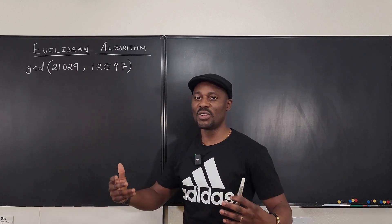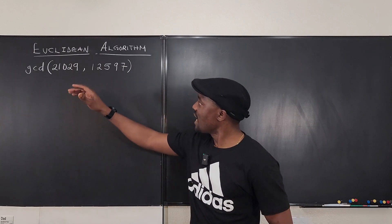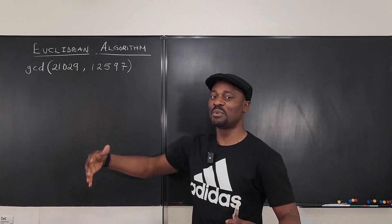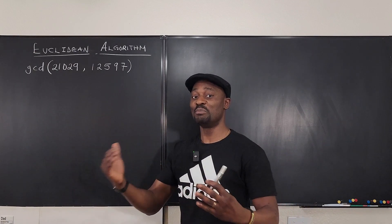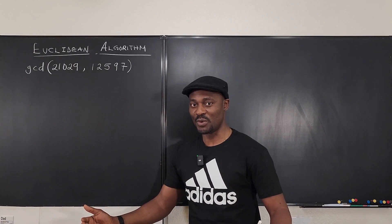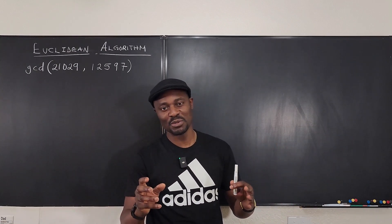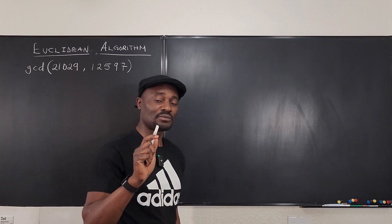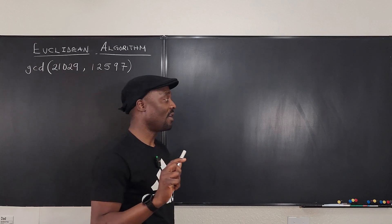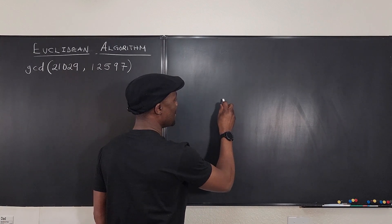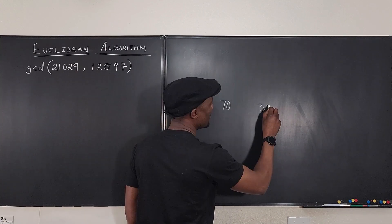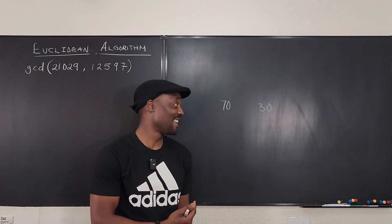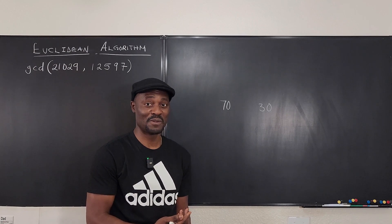The Euclidean algorithm was invented by Euclid. In another video I'll show you the proof of why it always works. For now, let's take smaller numbers we can work with. Let's say we're trying to find the greatest common divisor of 70 and 30 — what is the biggest number that can divide both 70 and 30? It's obvious that it's 10.